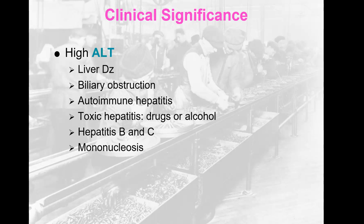High ALT is seen in any liver disease. Biliary obstruction can also raise ALT. Autoimmune hepatitis, toxic hepatitis from drugs or alcohol — all liver-related causes. Hepatitis B and C, as well as hepatitis A and mononucleosis.